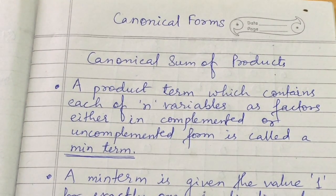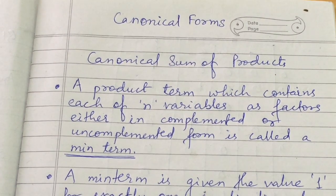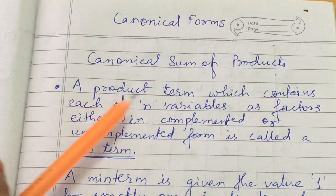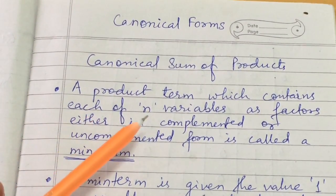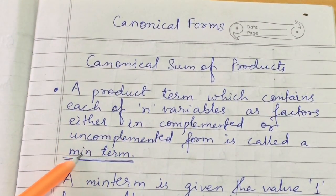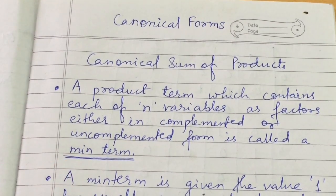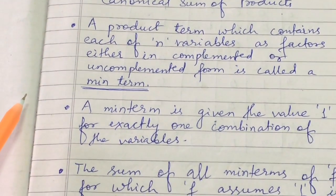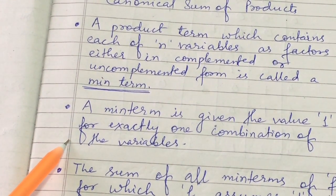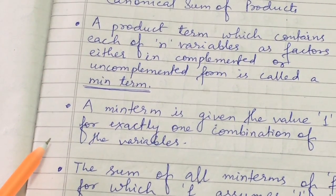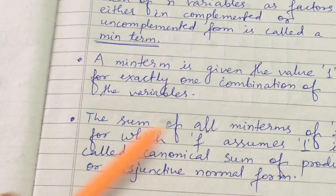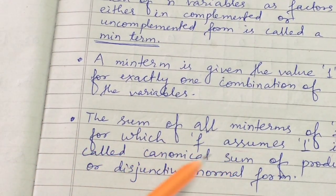The first is canonical sum of products and the other is canonical product of sum. Starting with canonical sum of products: a product term which contains each of n variables as factors either in complemented or uncomplemented form is called a min term. A min term is given the value 1 for exactly one combination of the variables.